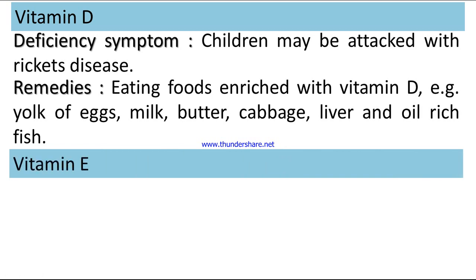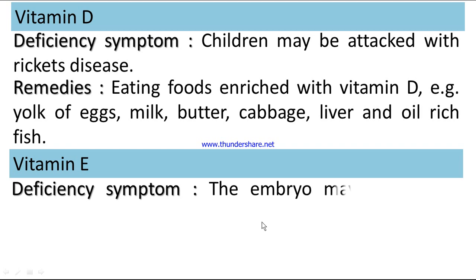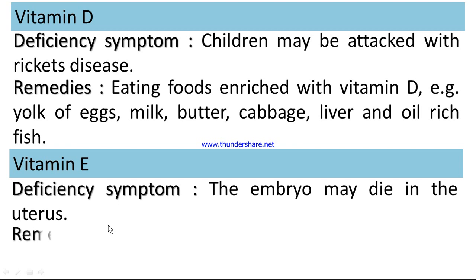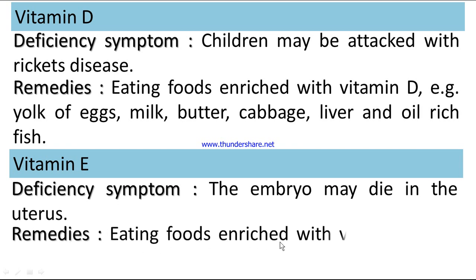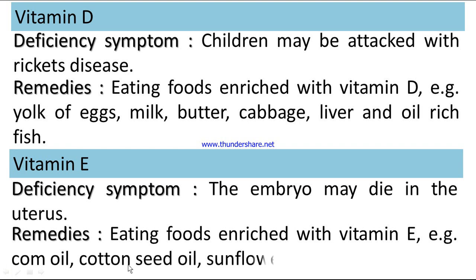Vitamin E — deficiency symptom: the embryo may die in the uterus. Remedies: eating foods enriched with vitamin E, e.g., corn oil, cotton seed oil, sunflower oil, and lettuce leaf.